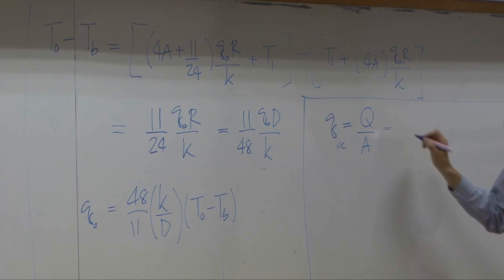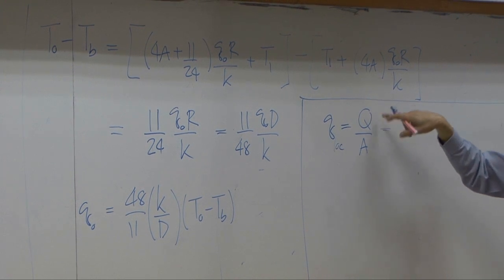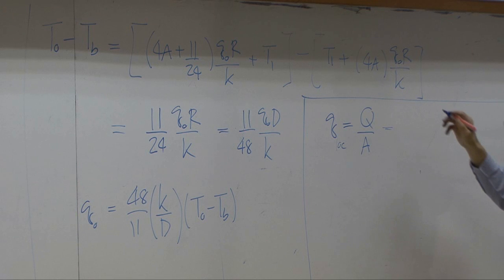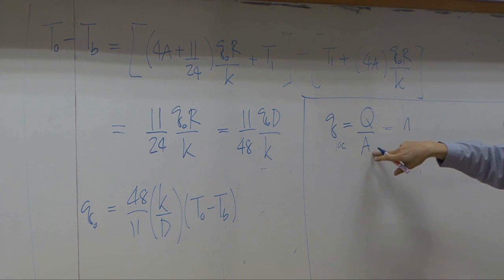So based on that, if you use overall heat flow rate or heating rate here, represented by Newton's law of cooling, Q is supposed to be equal to heat transfer coefficient A, and A here and A there cancel out. Times delta T, T0 minus Tb.